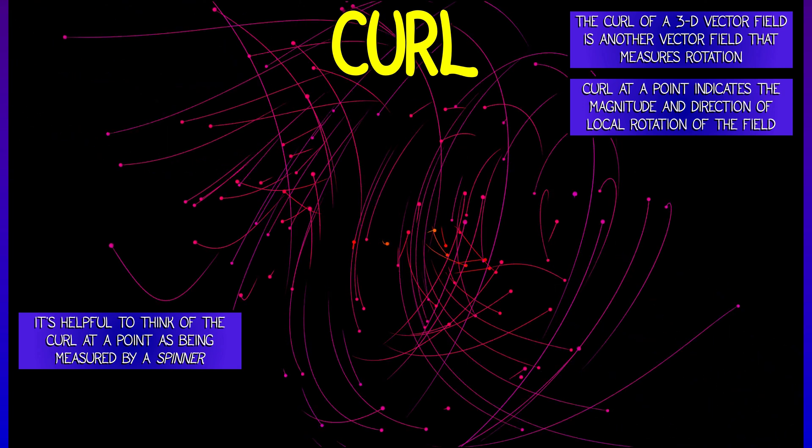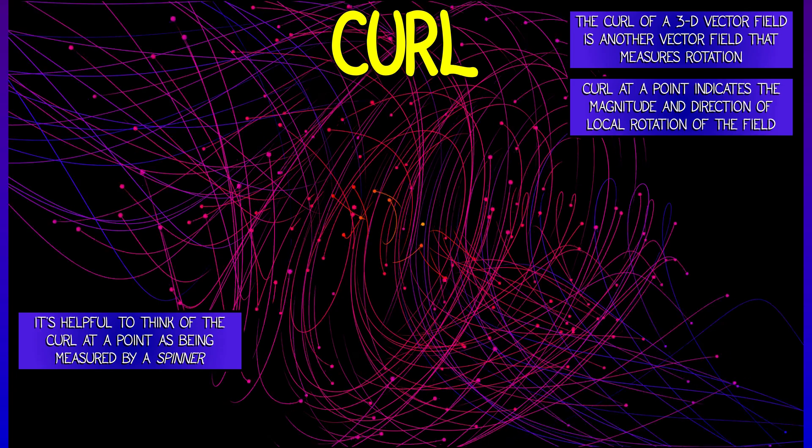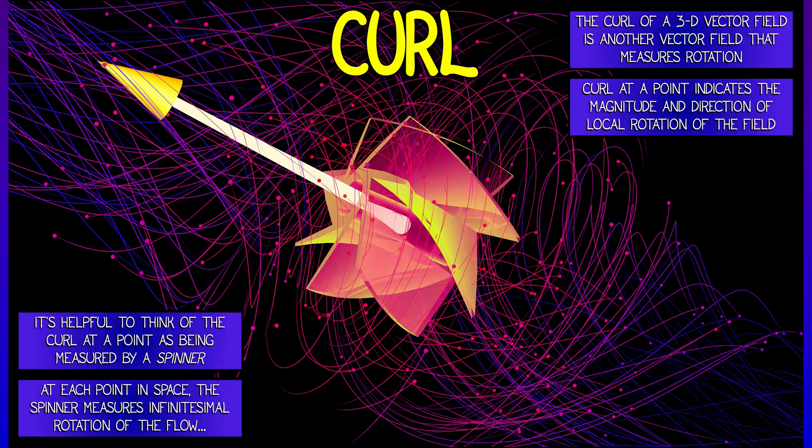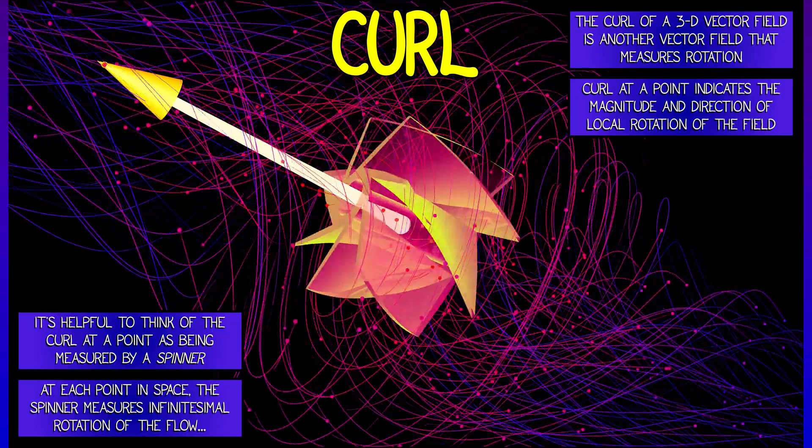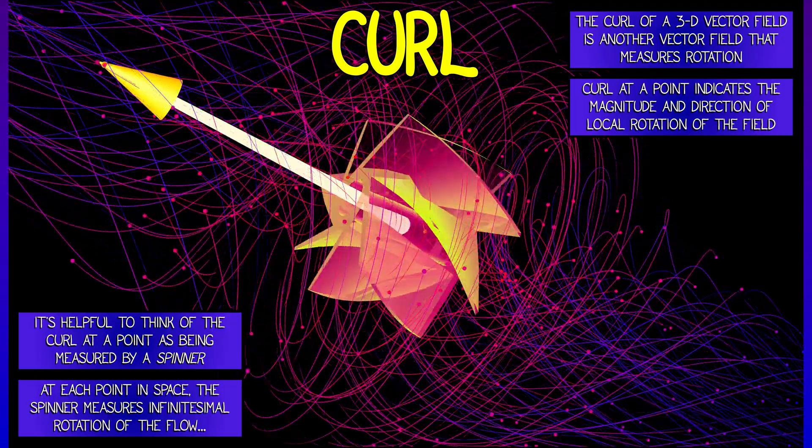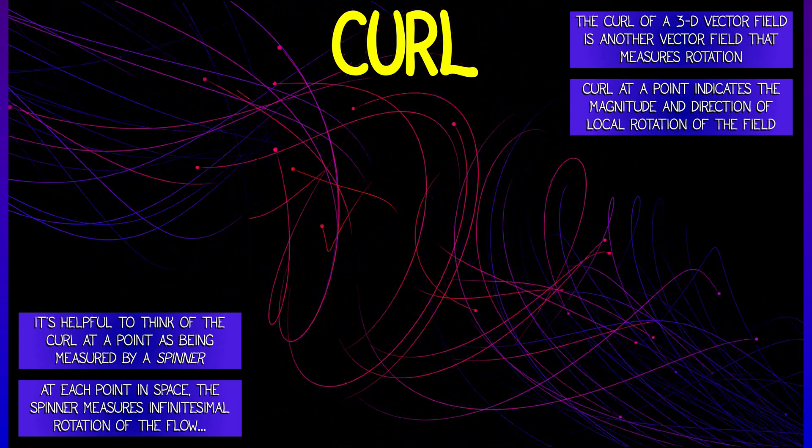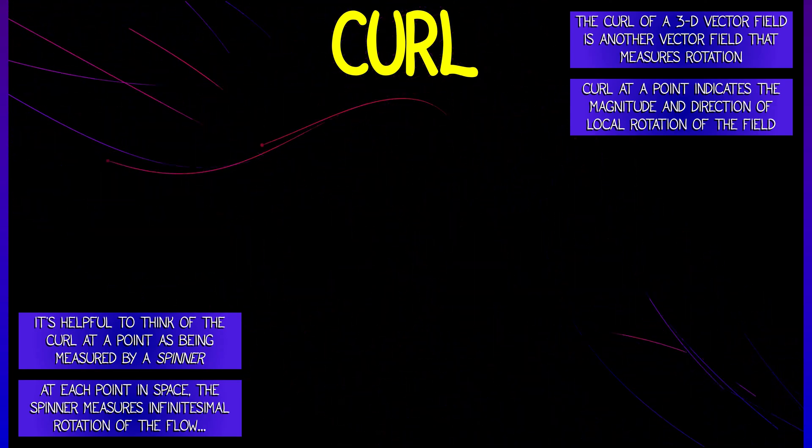It's helpful to think about this curl as being measured by some sort of spinner, where you insert this into the vector field at a point, and it spins around, and the direction in which it points is the curl with the magnitude being the amount of spin. That's the idea behind curl.